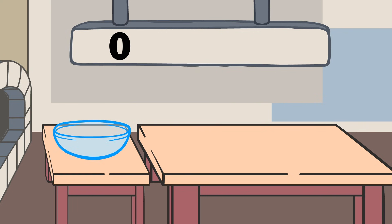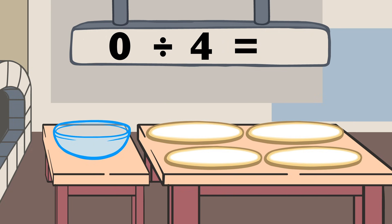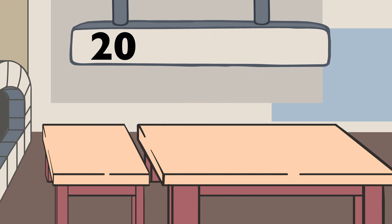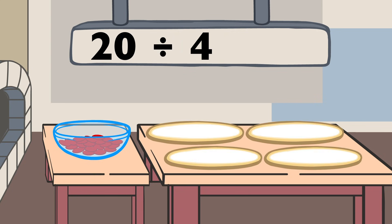Zero divided by four equals zero. Twenty divided by four equals five.